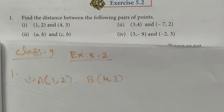Hi students, class 9, exercise 5.2, question number 1: find the distance between the following pairs of points. Four roman numerals are given. Let's see one by one. The first roman numeral is (1,2) and (4,3).